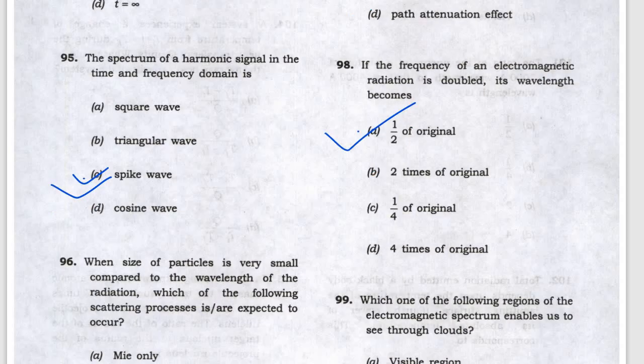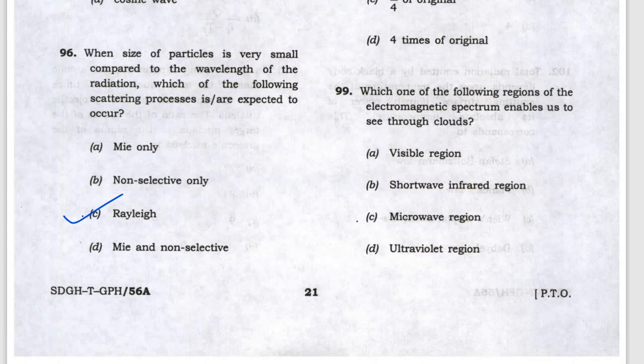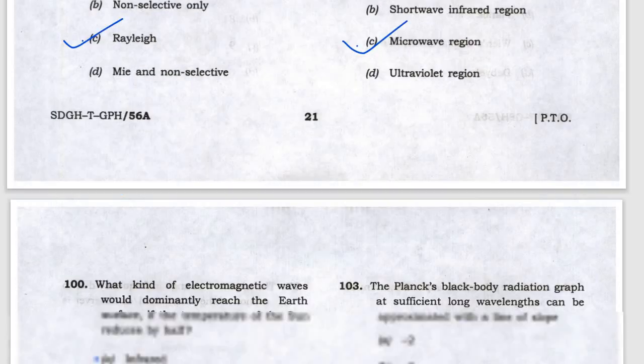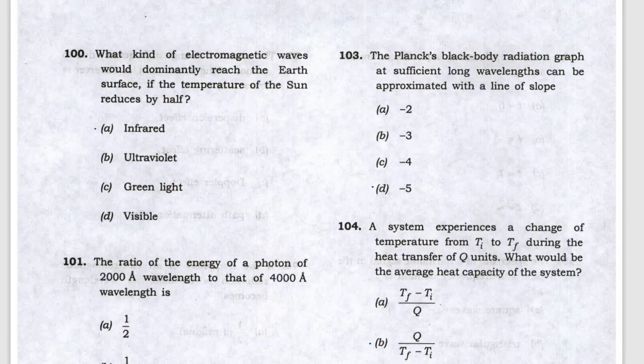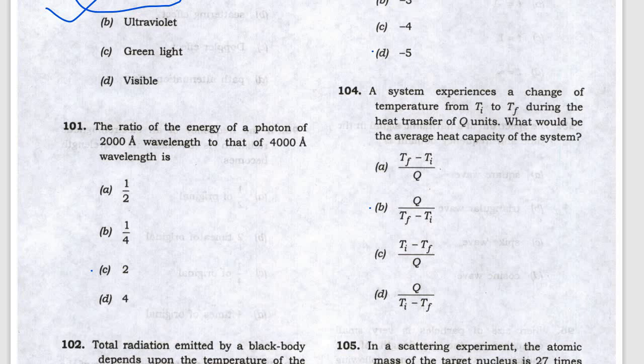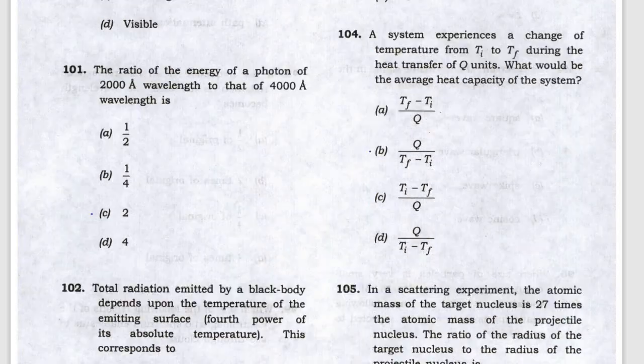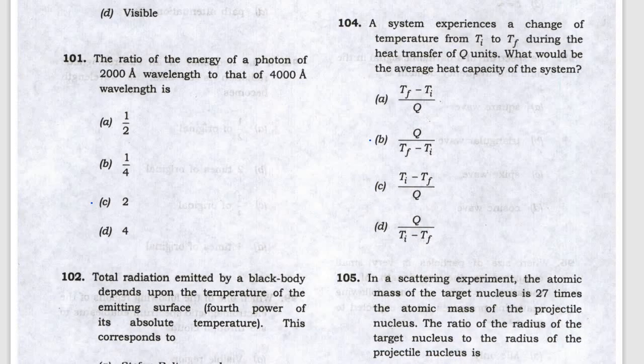Which region of electromagnetic spectrum can see through clouds is the microwave region. What kind of electromagnetic wave would be dominant is infrared. The ratio of energy for 2000 angstrom and 4000 angstrom gives answer C.